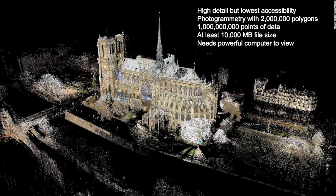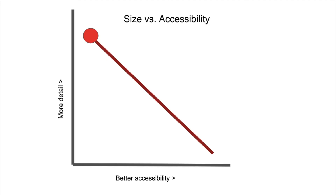Here's one example — I didn't create this model, but it illustrates the point. This is a photogrammetry model of Notre Dame of Paris with millions of polygons and billions of points of data, and it's a giant file size. It's really high detail but low accessibility, because something like this would have real difficulty loading in your web browser. This kind of model would also be difficult to interpret — for instance, if you wanted to edit it or turn it into a construction sequence of the cathedral in history.